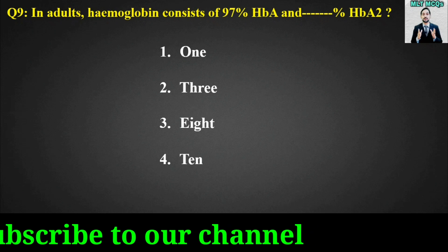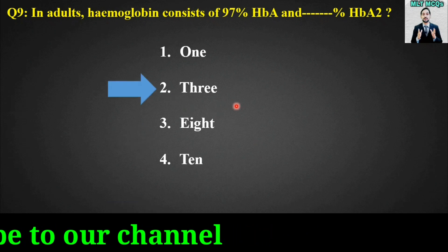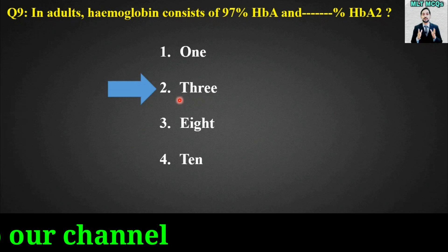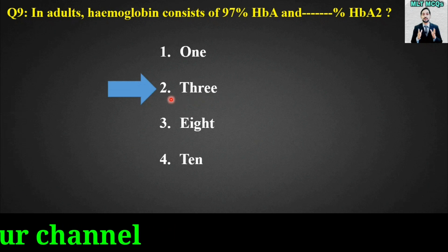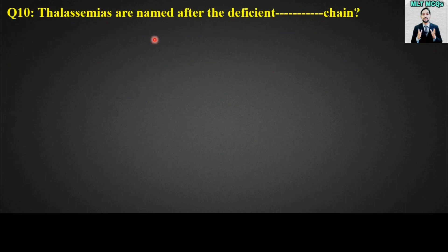MCQ number ten: Thalassemias are named after the deficient blank chain.